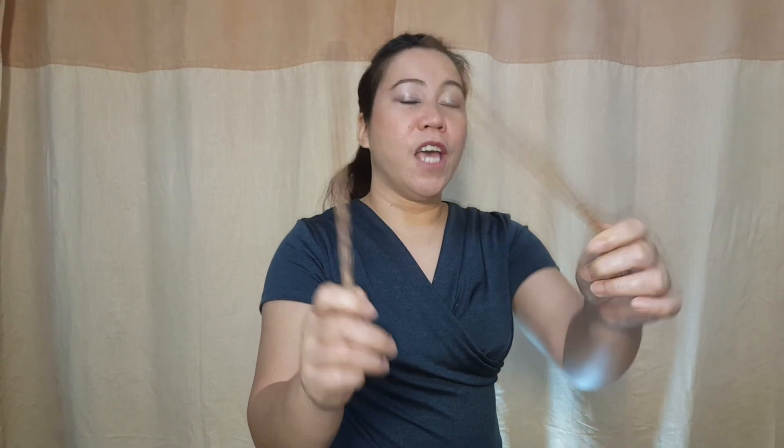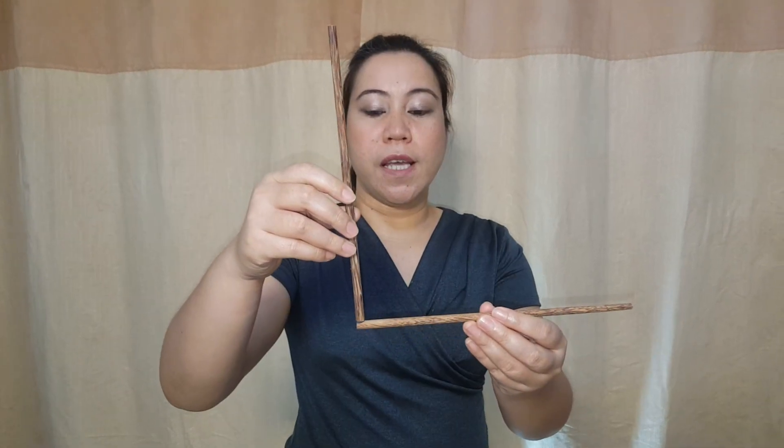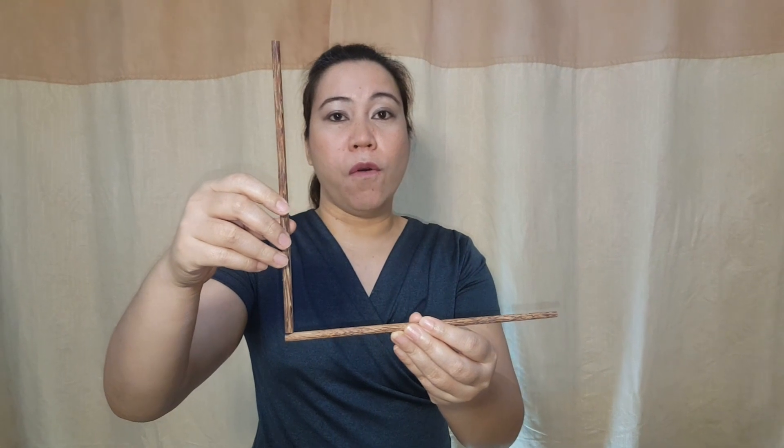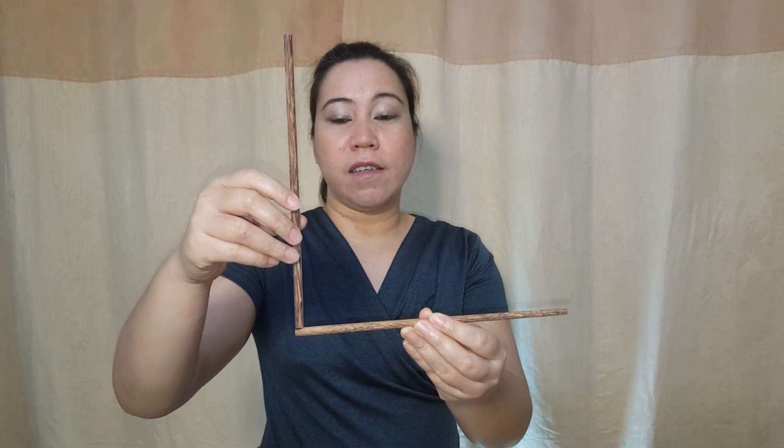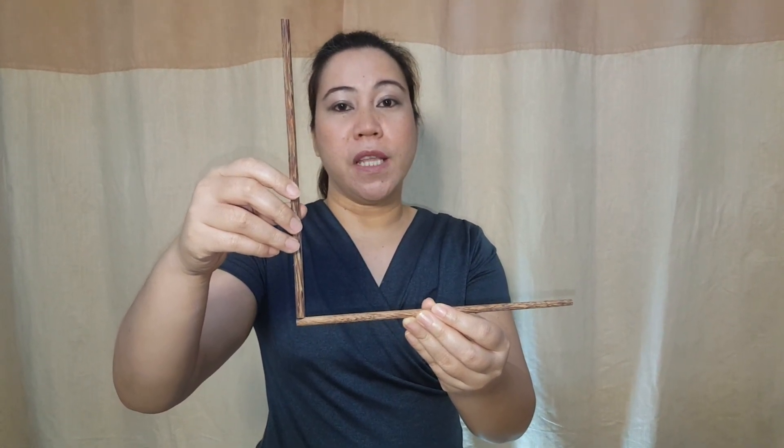When two lines meet, they intersect. And perpendicular lines are a special type of intersecting lines. When the two intersecting lines form a 90 degrees or a right angle, they are perpendicular lines.